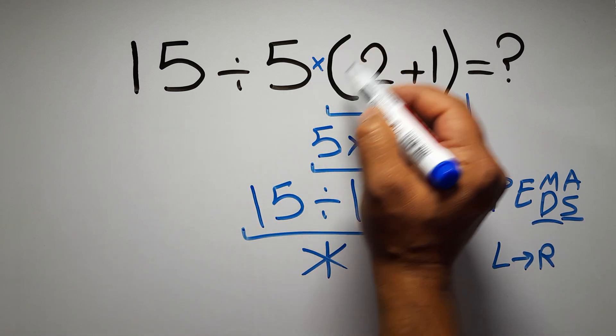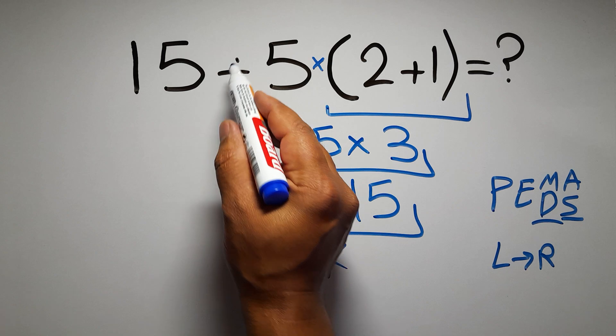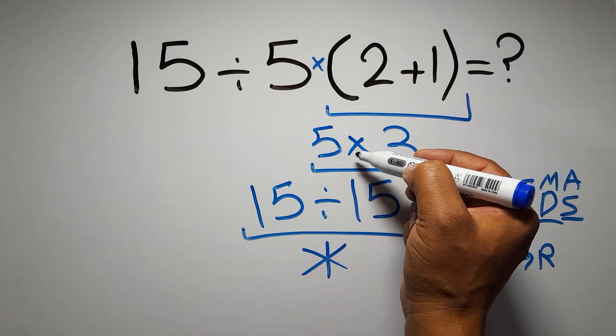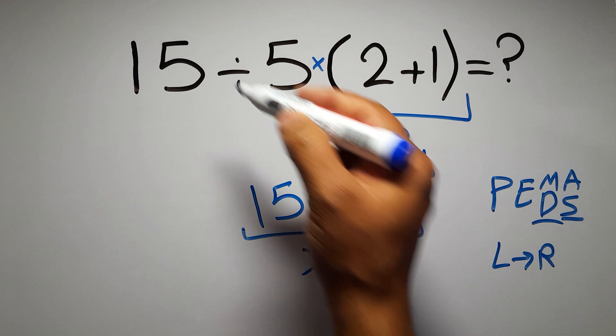So according to PEMDAS, first we have to do these parentheses, then this division, and finally this multiplication. If we do this multiplication before this division, it is wrong.